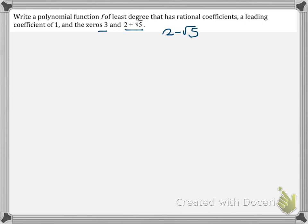So we have three solutions here. The first step is to write it in factored form. So x equals 3, right? So that factored form is x minus 3.